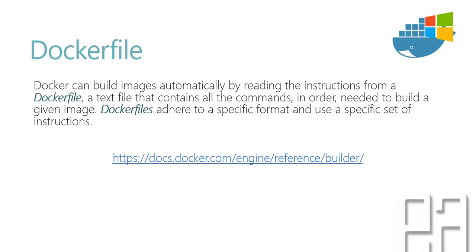Docker can build images automatically by reading instructions from what is called a Docker file — a text file that contains all the commands in order needed to build a given image. A Docker file adheres to a specific format and uses a specific set of instructions. You can see all this information at docs.docker.com/engine/reference/builder and understand how to work with Docker files in much greater detail.